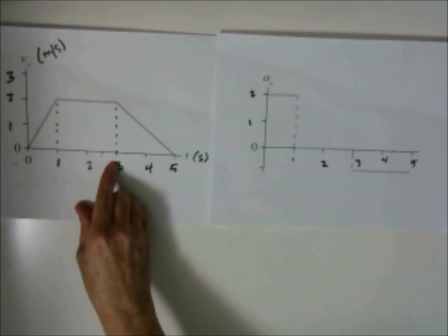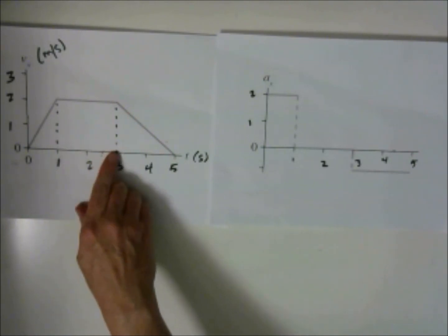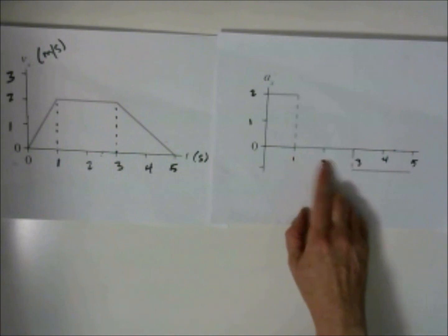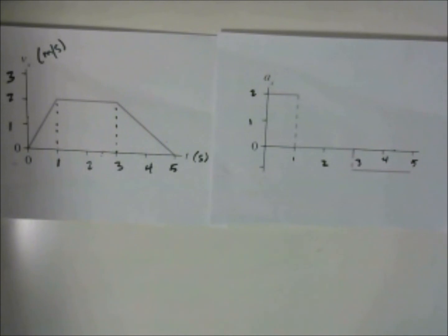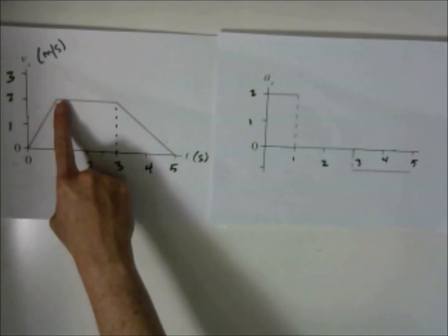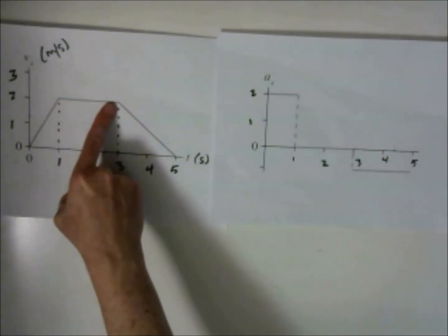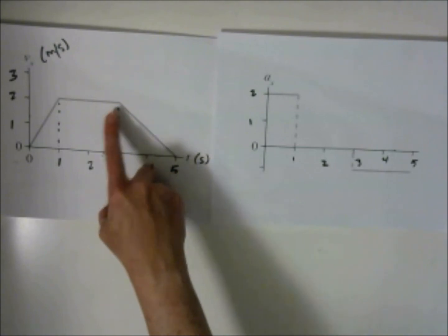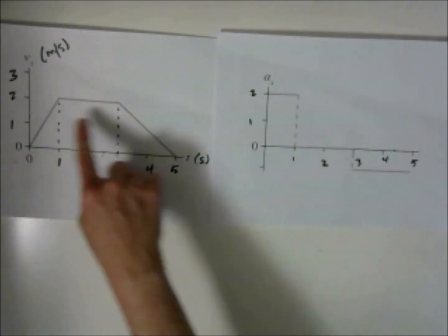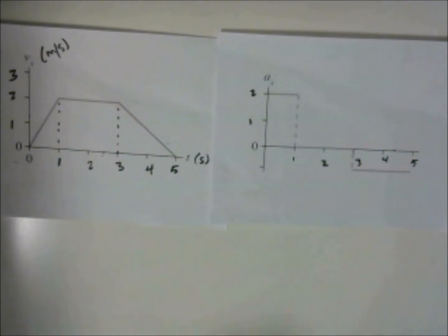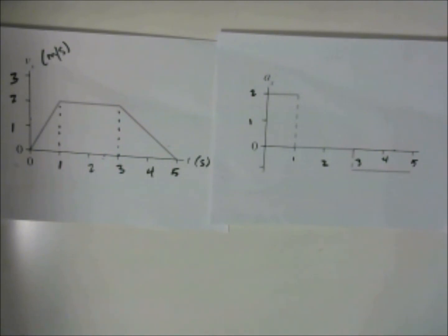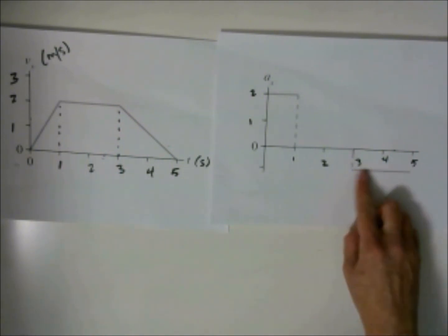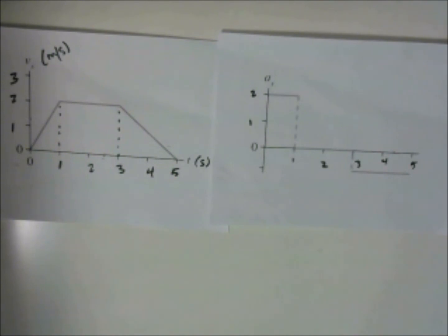For the second part of the graph, the slope is equal to zero, and on the acceleration-time graph the acceleration is also zero. Note this does not mean the velocity is zero — it just means it's traveling at a constant velocity of 2 meters per second from one second to three seconds. Finally, the slope for the last section from three to five seconds is negative one, which gives us a negative one on our acceleration-time graph.